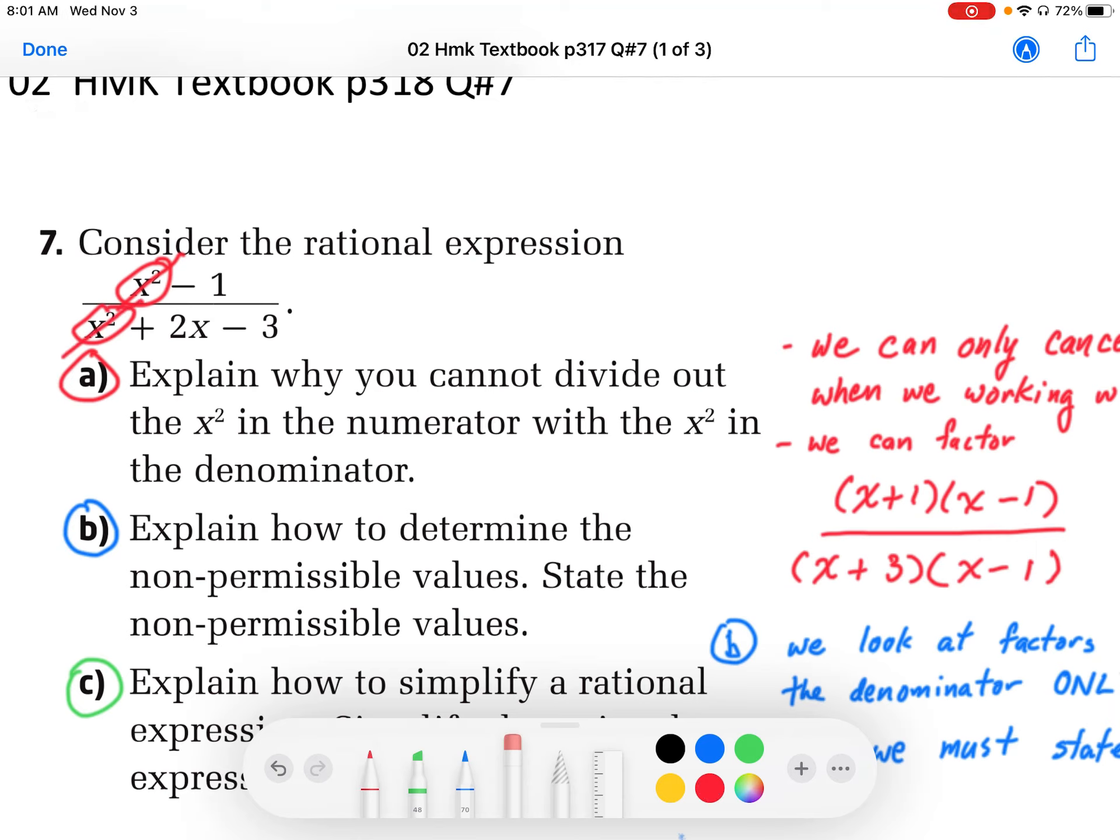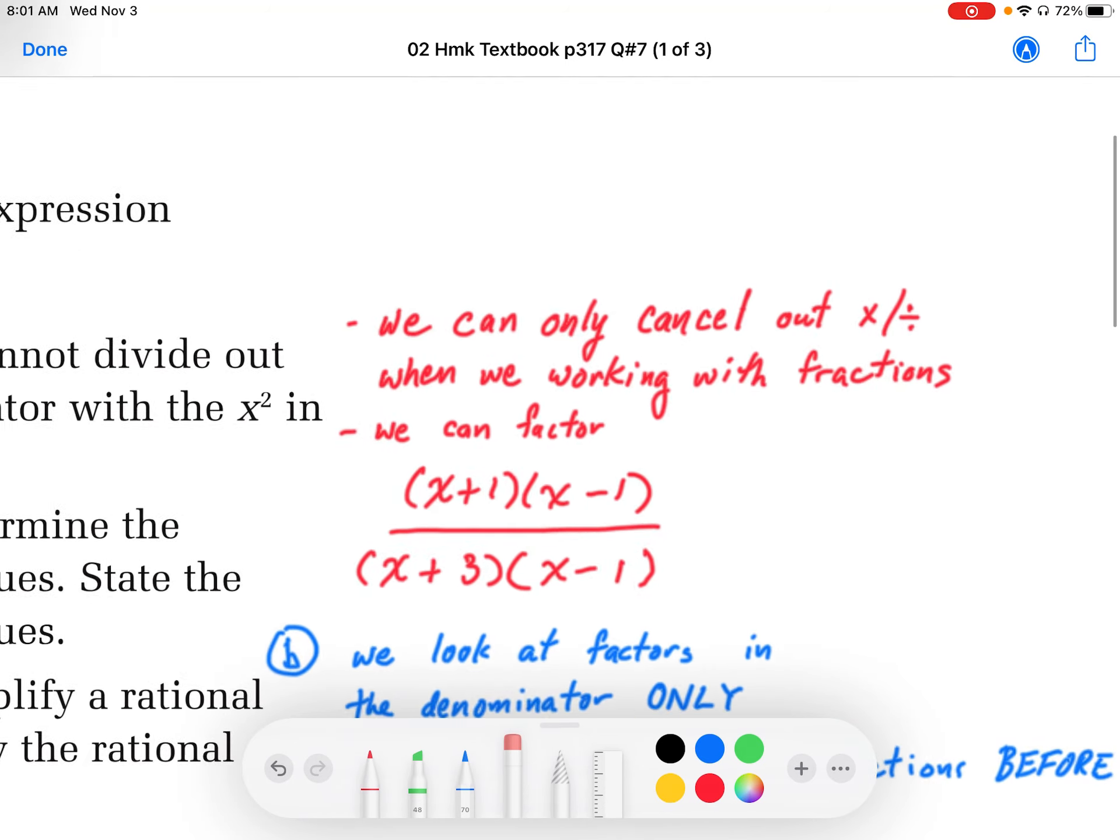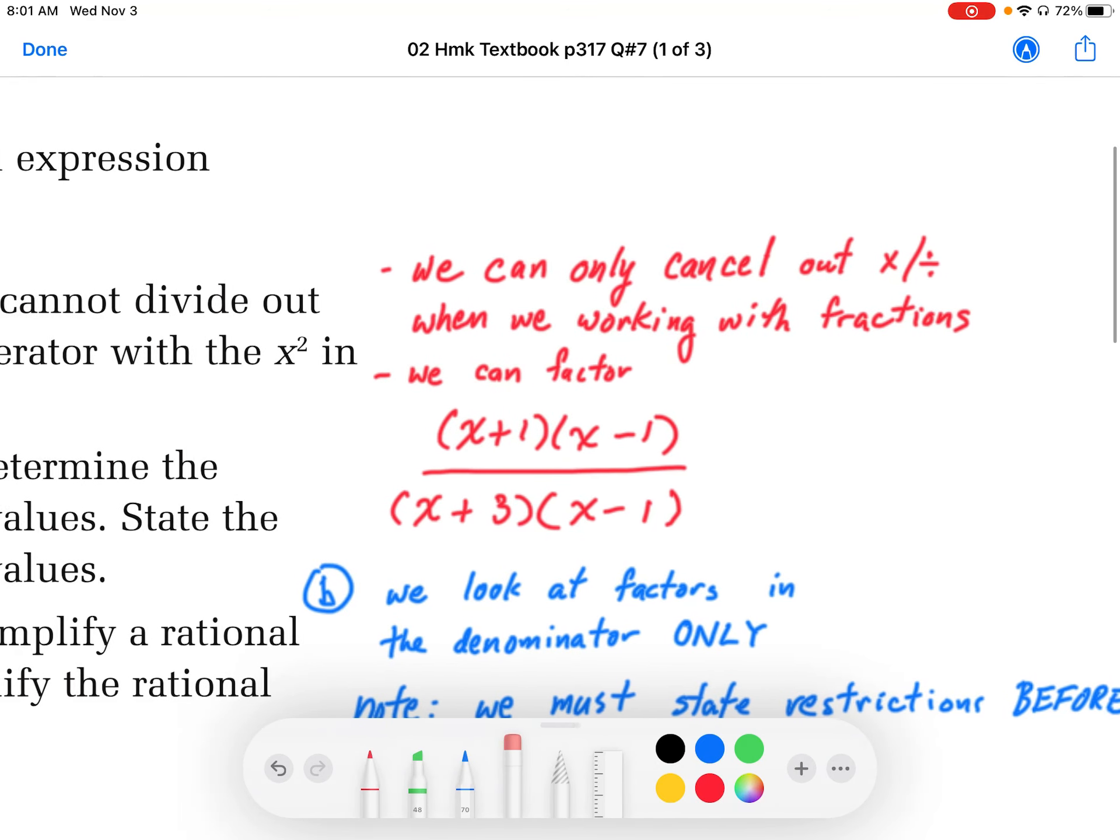Okay, so we cannot do that. So why can't we? What's the explanation for that? Well, when we cancel, when we're talking about fractions, we can only cancel out times and divides.